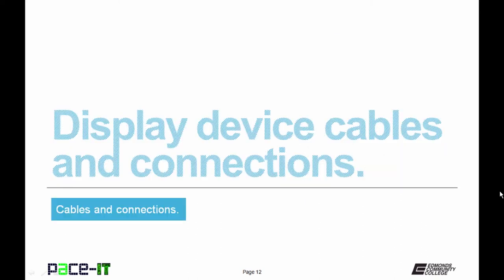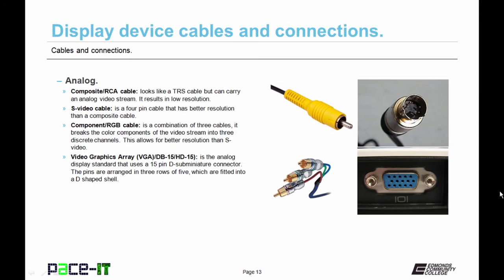So now let's move on to display device cables and connections. And we're going to begin with analog cables and connections. And the first one up is the composite RCA cable. Now this looks like a TRS cable, but it can carry an analog video screen. The end result is the lowest level of resolution that you can deliver to a monitor. Slightly better is the S video cable. It is a 4-pin cable that has better resolution than a composite cable, but still not very good resolution.